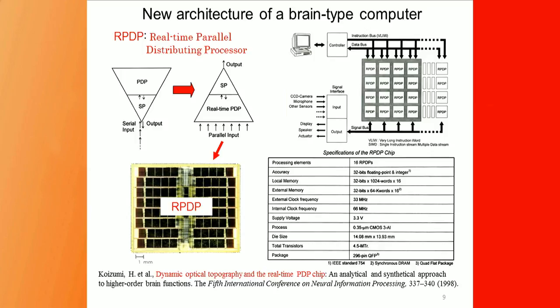We published this work in 1998 — it's a little old, but at that time we were working on a new architecture for a brain-type computer. This is our PDP — we named it a Real-Time Parallel Distributing Processor for brain computing. At that time, it was the first parallel processor in the world.